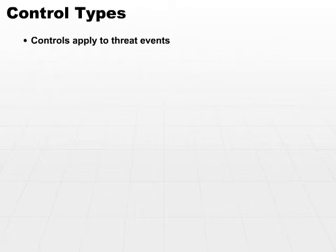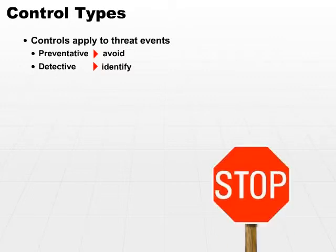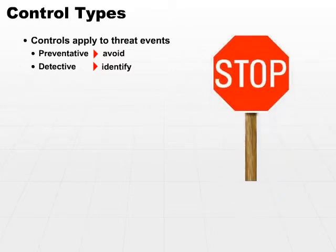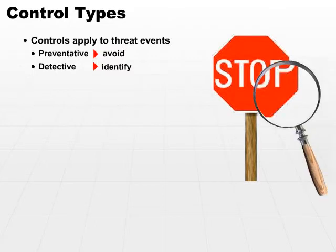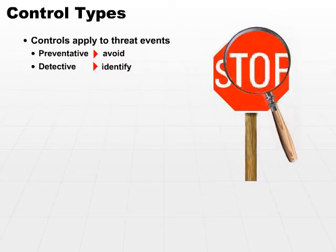First, we have a preventative control. The purpose of a preventative control is to avoid an event from occurring. A detective control, by contrast, is designed to identify that an event has actually occurred — totally different from preventative, which is to avoid the event in the first place.